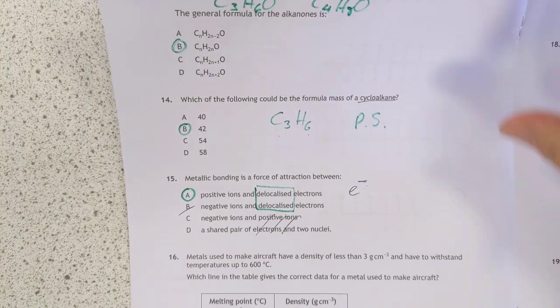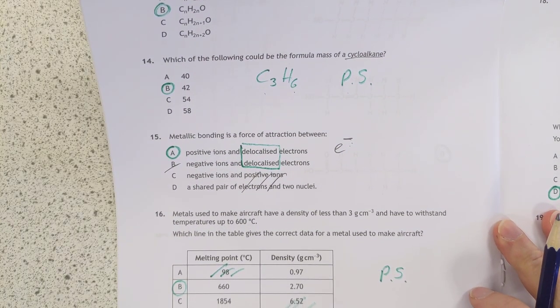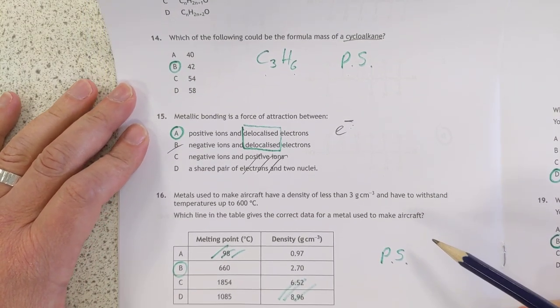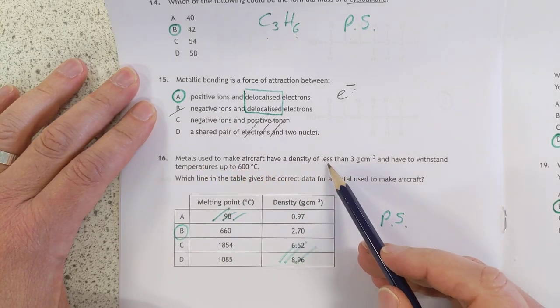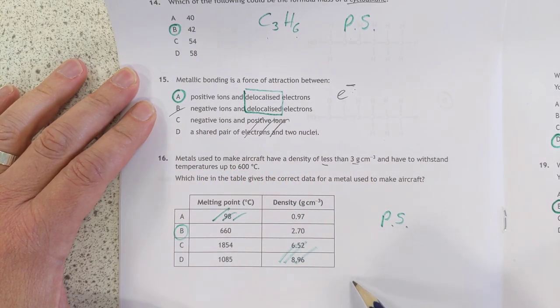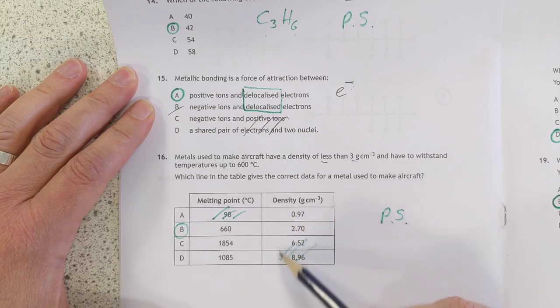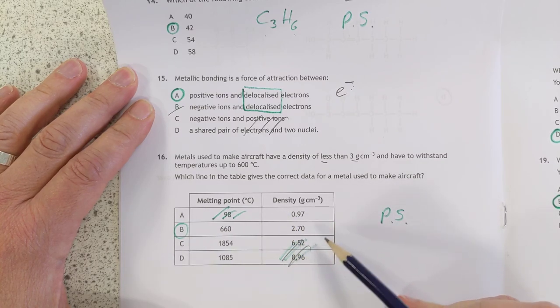Number 16. Problem solving again. Some nice problem solving questions here. I like these questions. Metals used to make aircrafts have densities of less than 3 grams per centimeter cubed. So I looked at these, and these are too dense, so I threw them out.